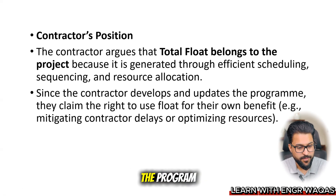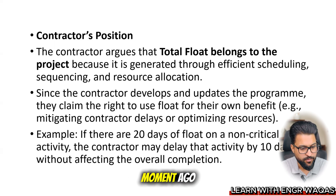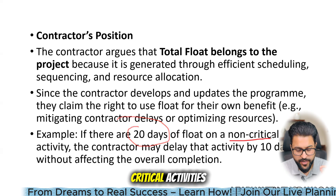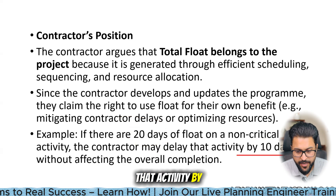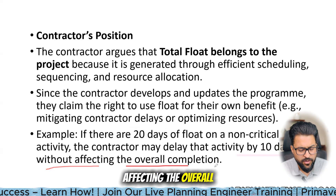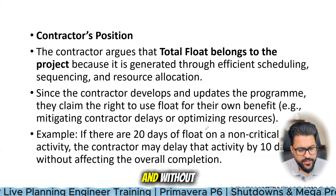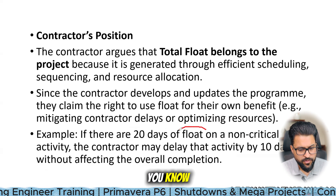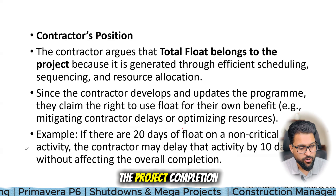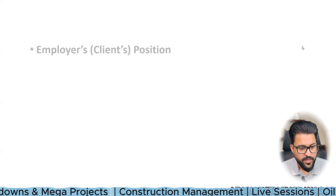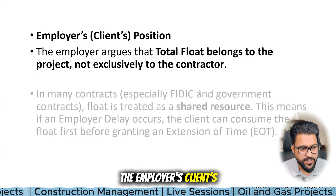Since the contractor develops and updates the program, they claim the right to use float for their own benefit. For example, if there are 20 days of total float on non-critical activities, the contractor may delay that activity by 10 days without affecting the overall project completion date. Total float is the number of days you can consume without disturbing the project completion date — that is the contractor's stance.